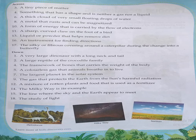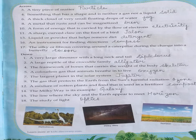The ninth down clue is: the gas that protects the earth from the sun's harmful radiation. The ozone layer protects us from the sun's harmful radiation. The answer is ozone — O-Z-O-N-E. Please write the correct spellings for Jupiter and ozone from here.